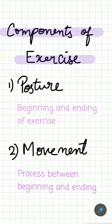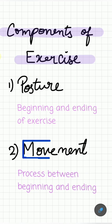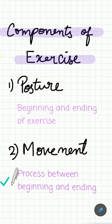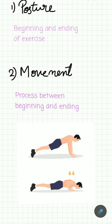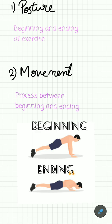There are two components of exercises: posture and movement. Posture is the beginning and the ending of the exercise, and movement is the process in between. For example, during a push-up, the starting and ending position is the posture, and lowering your body to the ground then rising up repeatedly is the movement.